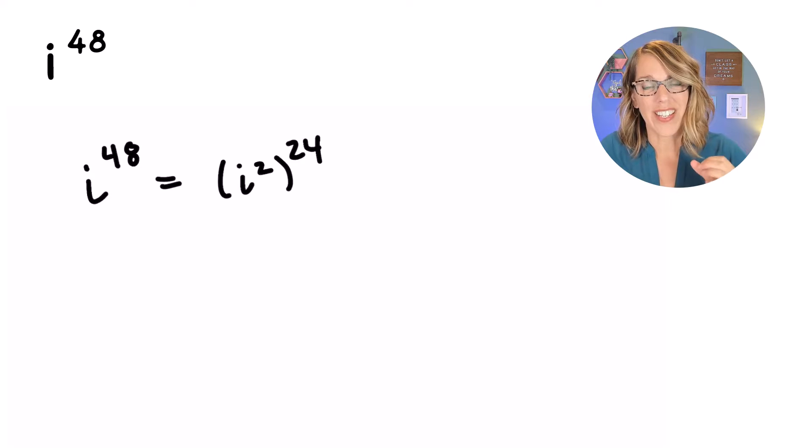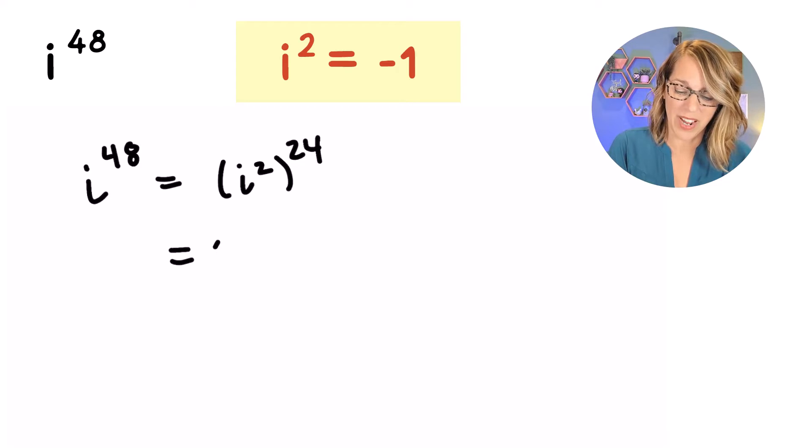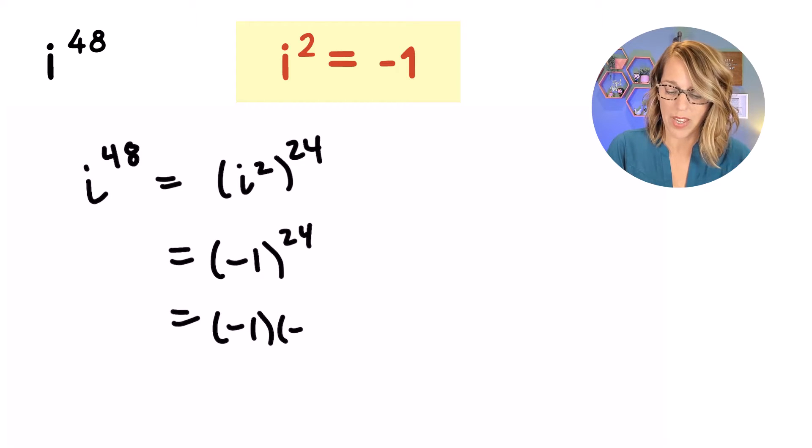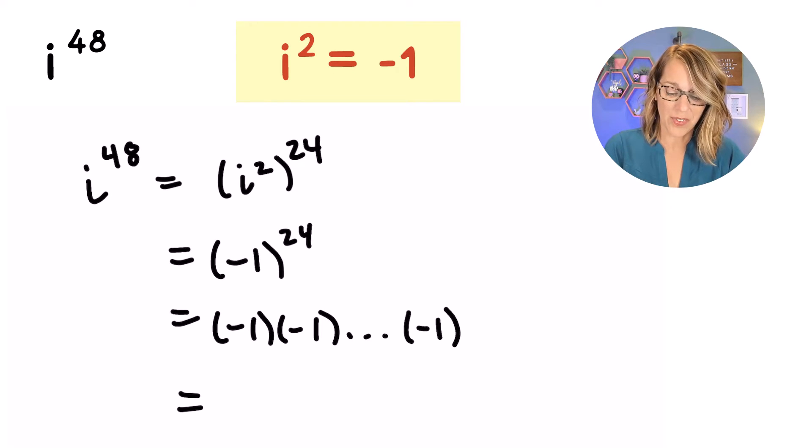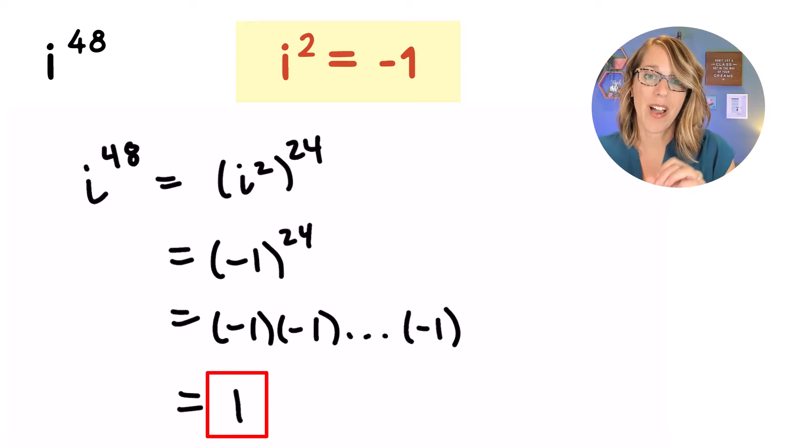Now I can use that part of the definition that says i squared is equal to negative 1. So continuing to simplify this, that i squared becomes negative 1, and I've got that to the 24th power. So I've got negative 1 multiplied 24 times. That's an even number of negatives, which means our answer for this first one is positive 1.